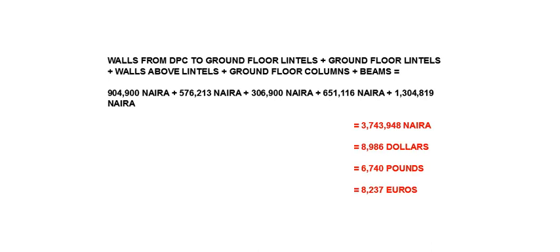So the total cost of the ground floor — when we add everything from the walls after the concrete floor up to the cost of the beams — is 3,743,948 Naira, approximately 8,986 dollars, 6,740 pounds or 8,237 euros.